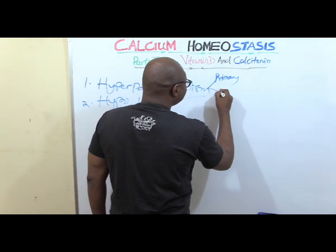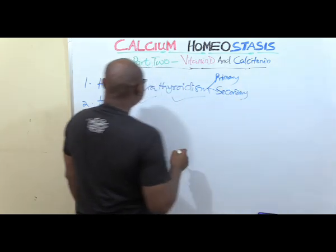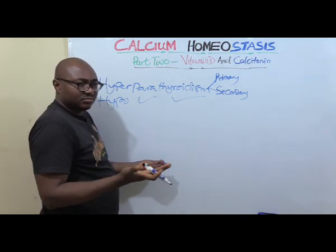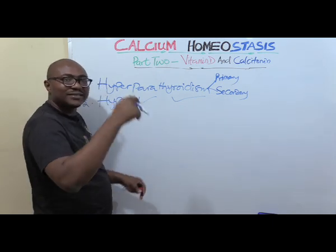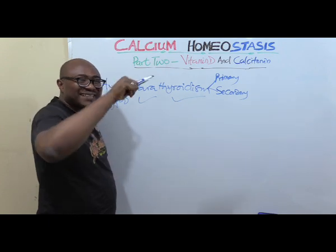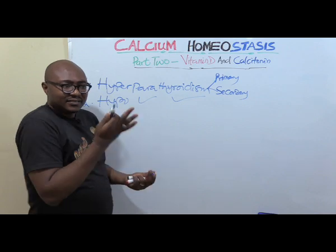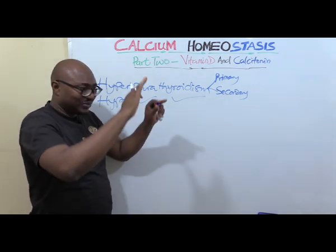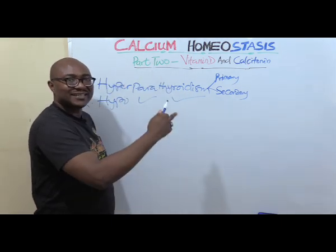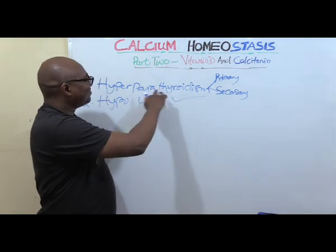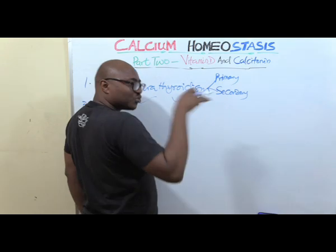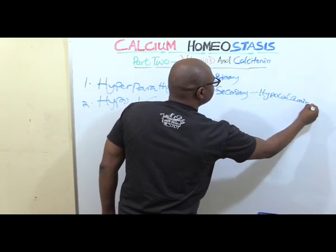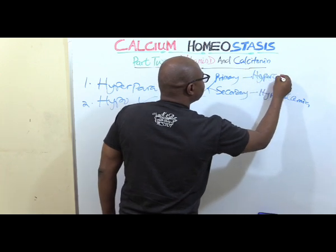In secondary hyperparathyroidism, there is also excess secretion of parathyroid hormone, but there is no hypercalcemia. Instead, there could be normal calcium levels or, most commonly, reduced calcium — hypocalcemia. This results from vitamin D deficiency. When vitamin D is deficient, calcium cannot be absorbed from meals in the intestines, so the reduced calcium level provokes the parathyroid to secrete excess PTH to try to correct it. So there is hyperparathyroidism, but it is secondary — and this mostly presents as hypocalcemia.